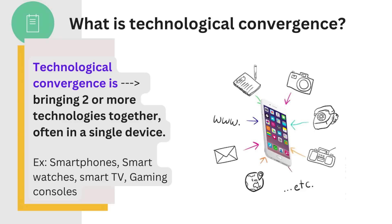For example, prior to smartphones, people relied on a collection of single-purpose devices. Some of these devices included telephones for calls, wristwatches for time, digital cameras for photos, and global positioning GPS navigators for directions.